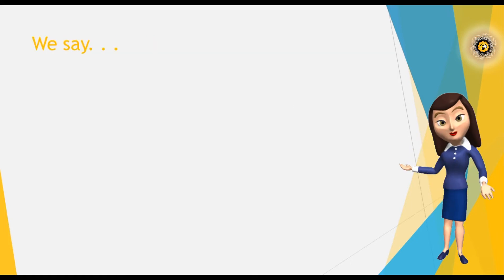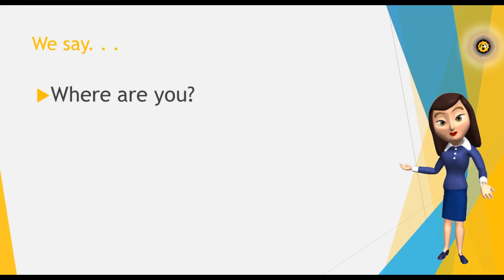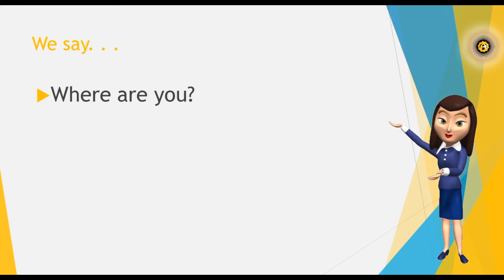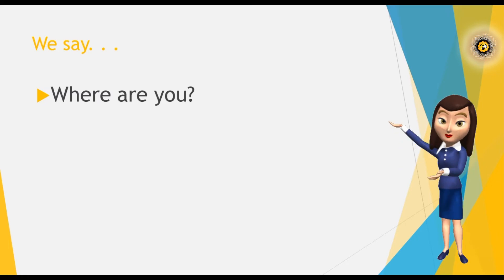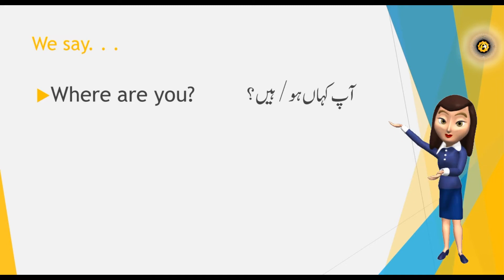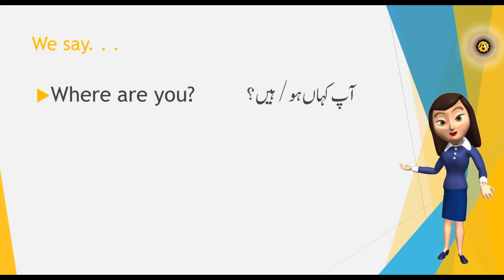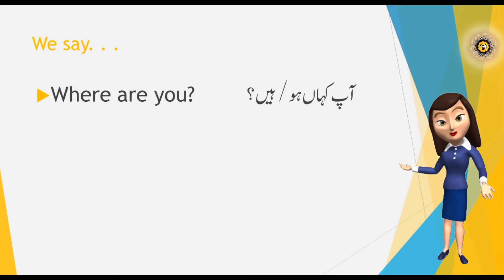Now let's learn to say the question sentence 'Where are you?' in Urdu. When you are talking to your friends or a cousin who is younger than you or the same age, you say 'Aap Kahaan Ho.'